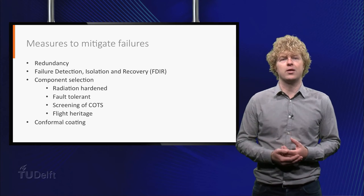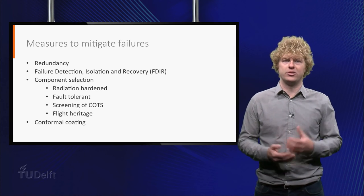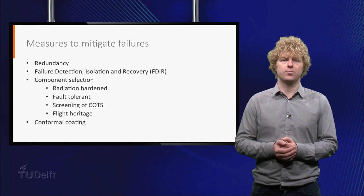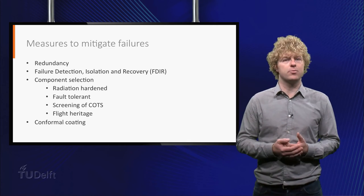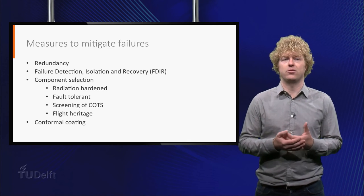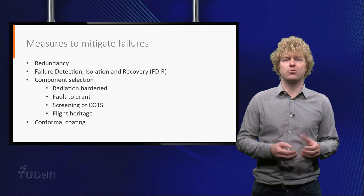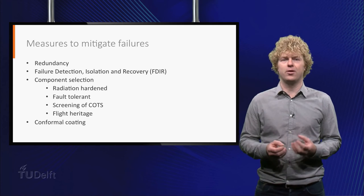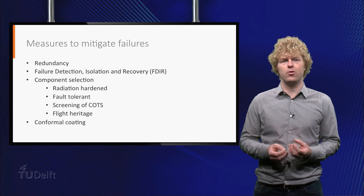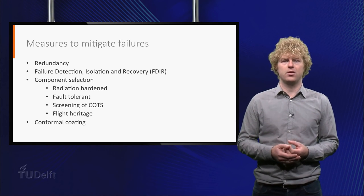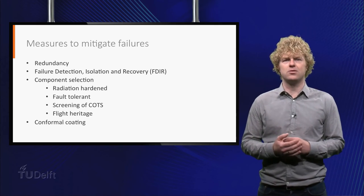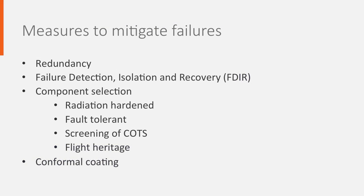Conformal coating is a thin polymeric film which is applied over a fully assembled electronic board. It protects the board against the environment such as moisture and provides extra structural rigidity to the circuit. It also improves the thermal handling capability. The improvement in reliability may be subtle, but since it is not so difficult and expensive to do, it may still be worthwhile.